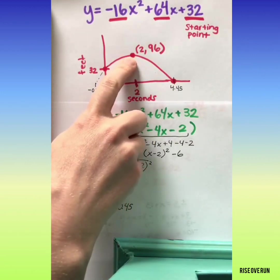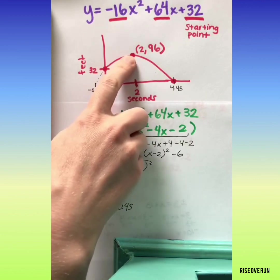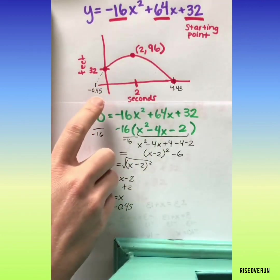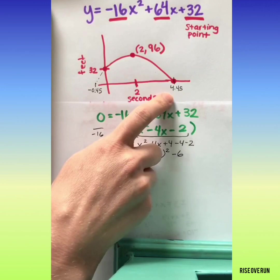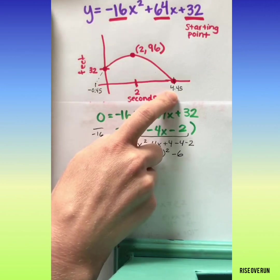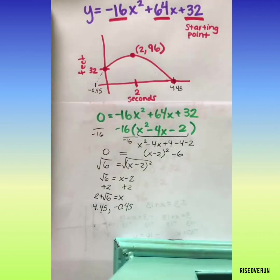So we used some algebra to find all these critical points of the graph. The maximum, or the vertex, happened at 2 seconds and 96 feet. The ball hits the ground at 4.45 seconds, and it started at 32 feet.